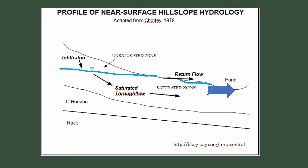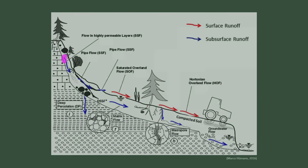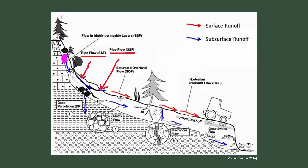The next mechanism we're going to talk about is piping flow. Much like the naming implies, water begins to move very quickly through the subsurface — as water through pipes — and then emerges at some sort of break in the soil surface. Most of the time this break is either through a mechanical or a natural erosion cut into the topography of the land.